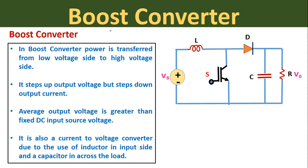Now let us see some important points related to boost converter. In a boost converter, power is transferred from low voltage side to high voltage side — it steps up the output voltage but steps down the output current. The average output voltage V0 is greater than the fixed DC input source voltage Vs, which is why it is called a boost converter. It is also called a current-to-voltage converter due to the inductor on the input side and capacitor on the output side.